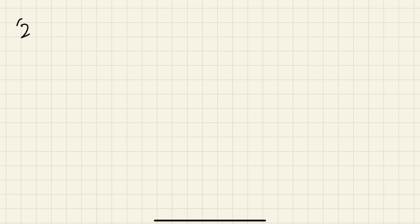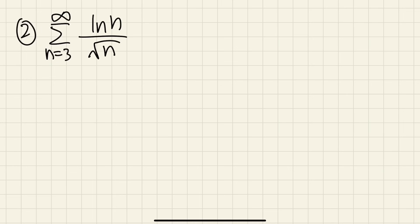Number 2: we are looking at the series as n goes from 3 to infinity of ln(n) over √n. Imagine if we didn't have the ln(n) — if we just had 1 over √n, that's the series of 1 over n to the 1/2 power, which is a p-series. So we're going to draw a connection. How can I get rid of the ln(n) though?